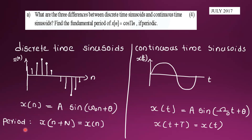For a discrete-time sinusoid to be periodic, it must satisfy x(n + N) = x(n). For a continuous-time sinusoid to be periodic, it must satisfy x(t + T) = x(t).